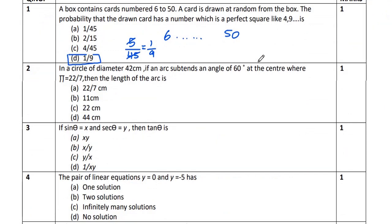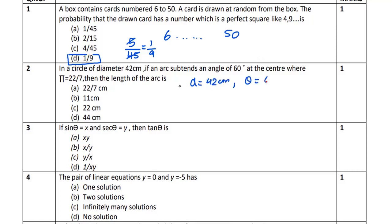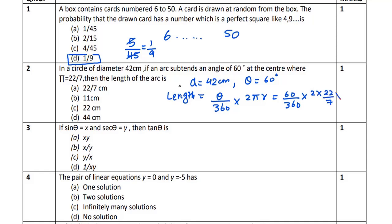Question 2: In a circle of diameter 42 cm, an arc subtends an angle of 60 degrees at the center. Find the length of the arc, where π = 22/7. This is a direct formula question: arc length = (θ/360) × 2πr. Substituting θ = 60, r = 21, π = 22/7: we get (60/360) × 2 × (22/7) × 21. Simplifying — 3 cancels with 21 to give 7, and 7 cancels — giving 22. The answer is 22 cm, which is option C.